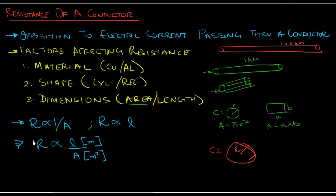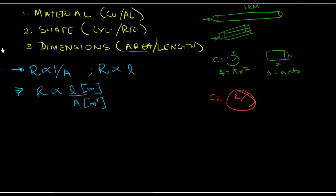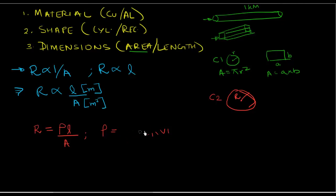To convert this proportionality into an equation, we need a proportionality constant. The equation is R = ρL/A, where ρ (rho) is called resistivity.